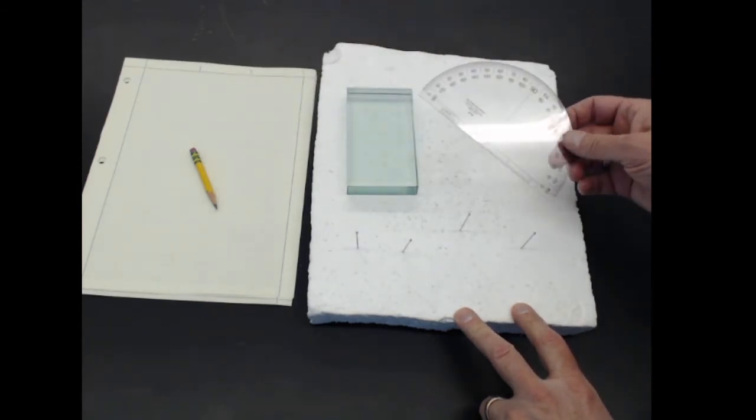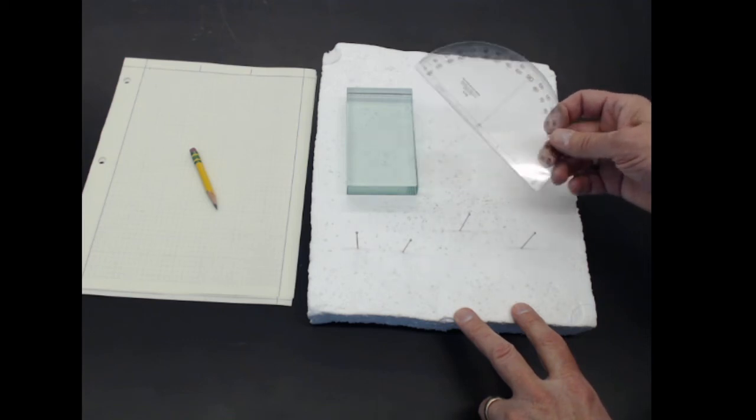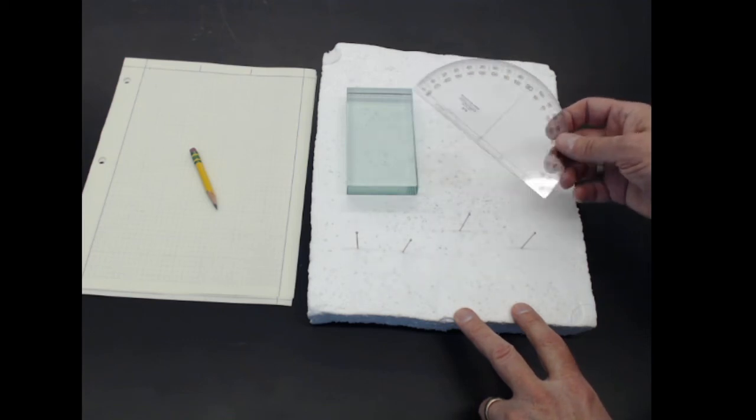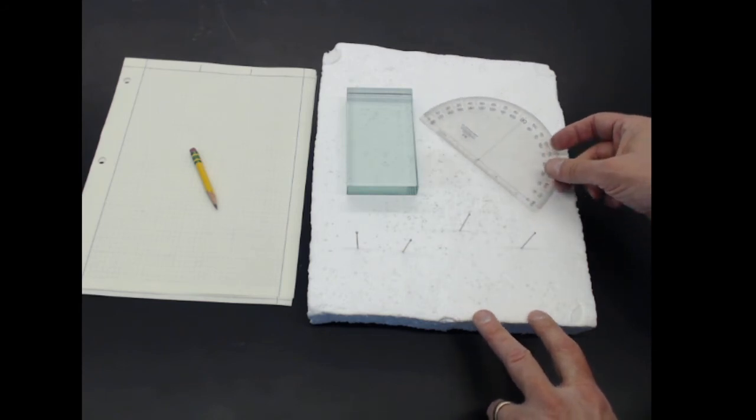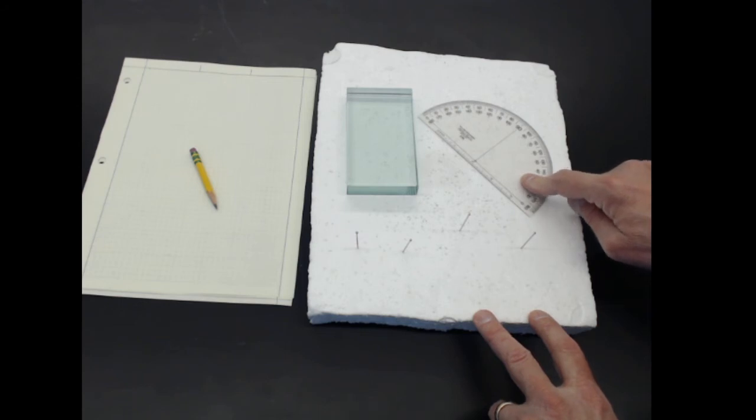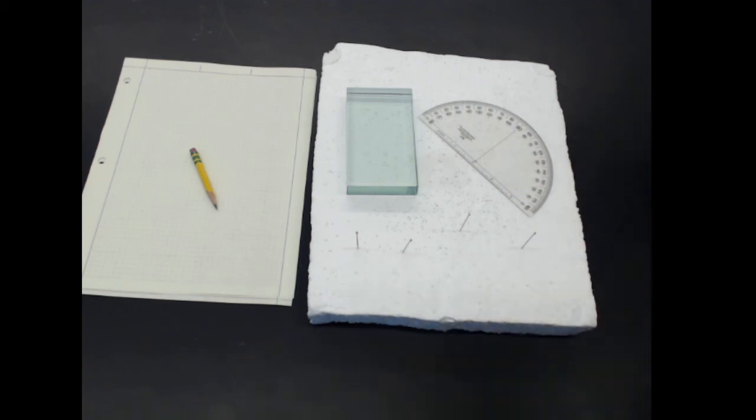And then we're going to measure an angle or some angles here. So I have a protractor and actually you're going to need a protractor at home to make measurements of the angles yourself. So you want to see if you can find a protractor. And this is basically all the equipment that you're going to use.